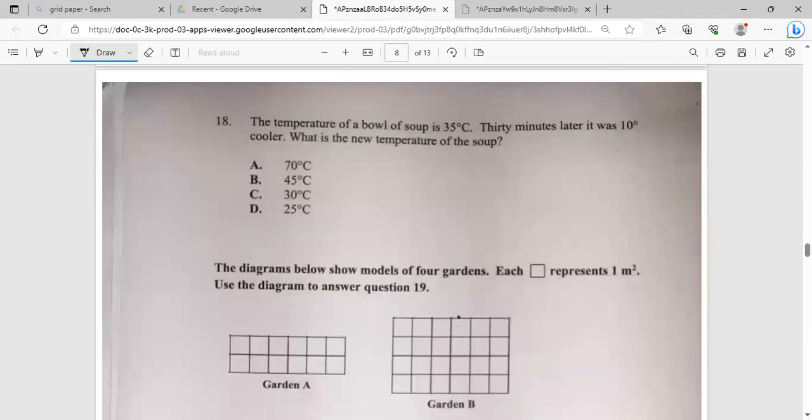The temperature of a bowl of soup is 35 degrees. 30 minutes later it was 10 degrees cooler. What was the temperature in the soup? So we are at 35, if it's getting cooler, it means the temperature is getting less. The less number we are, the colder it gets, so we'll just subtract the 10, and that will give us our answer, which is 25 degrees. So that would be C.